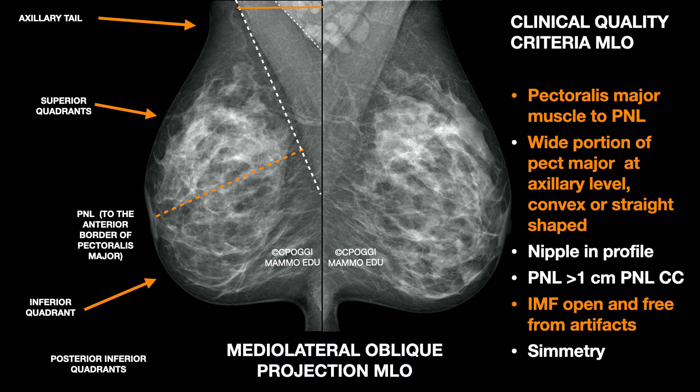Very important is also the documentation of the IMF, open and free of artefacts. Actually, it is not the IMF in itself that is important — the probability to find lesions in this location is very low. It is much higher in the posterior inferior quadrant, just above and in front of the IMF, and you can see it only when the IMF is present, and you don't see it on the CC projection.